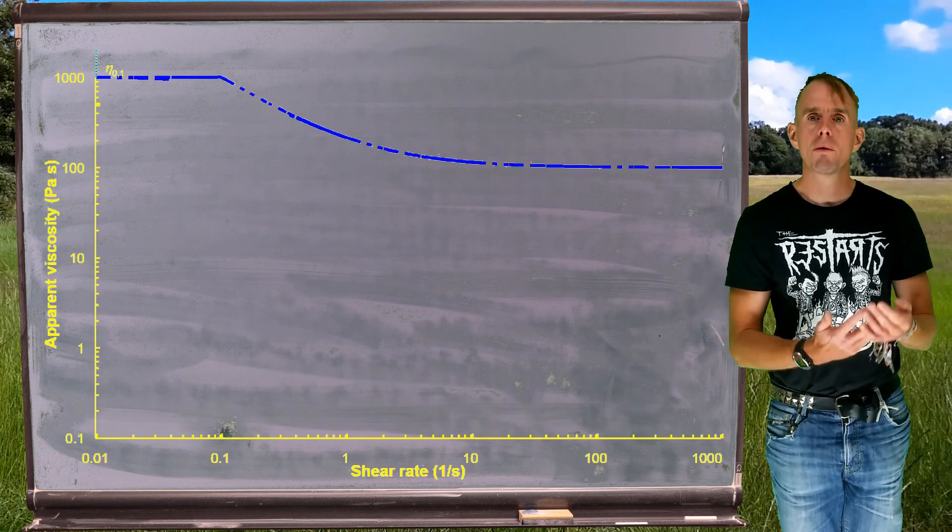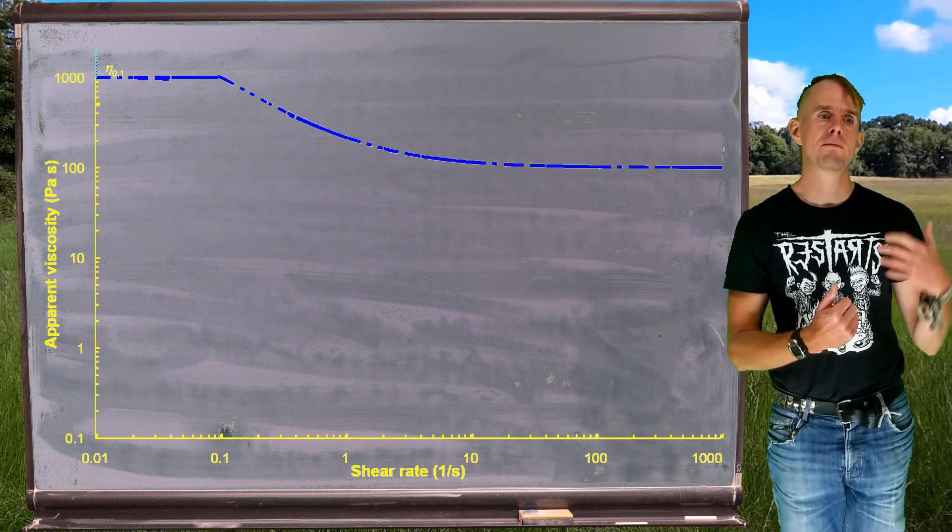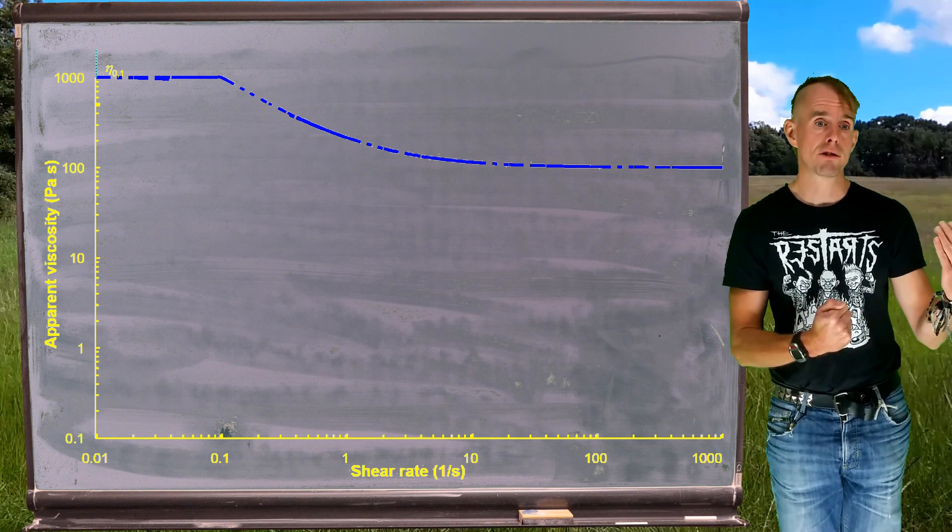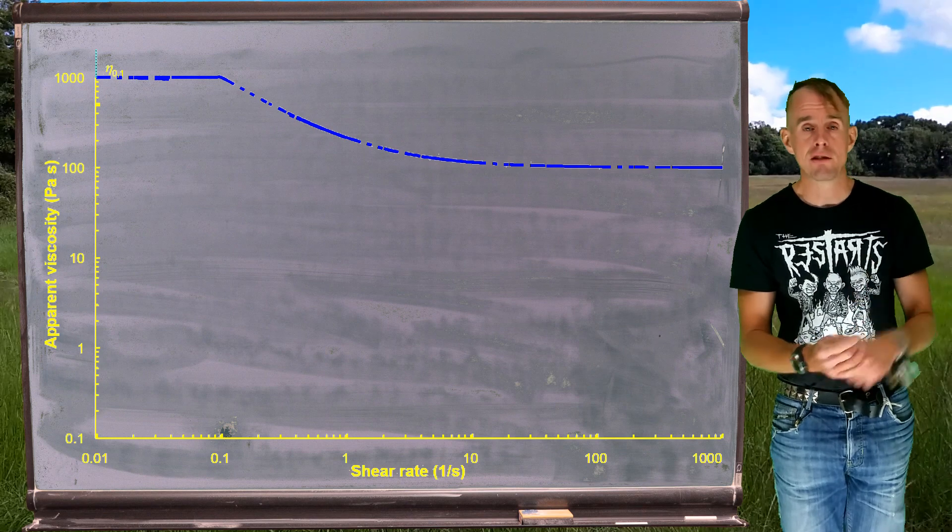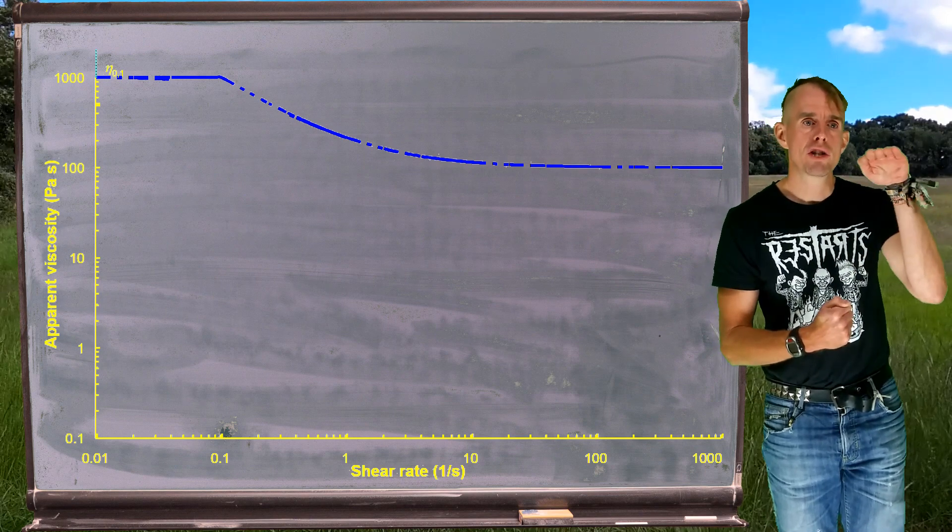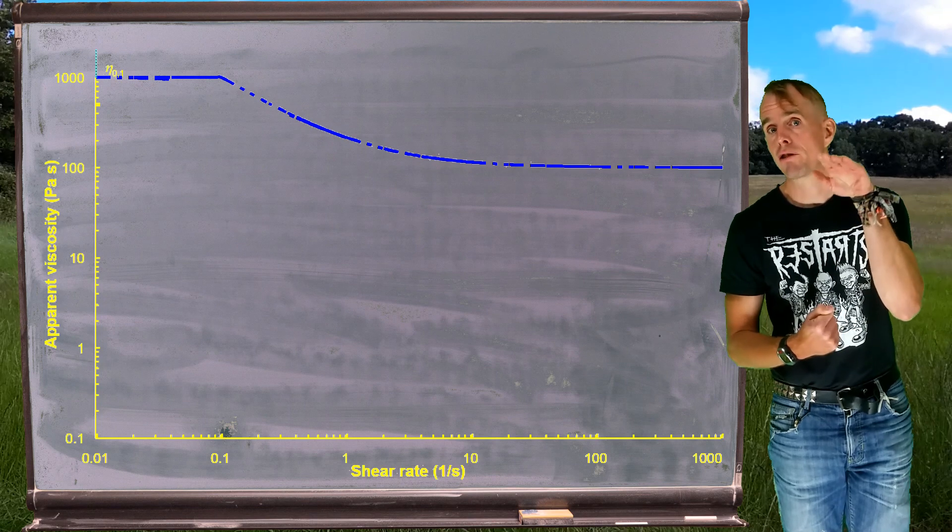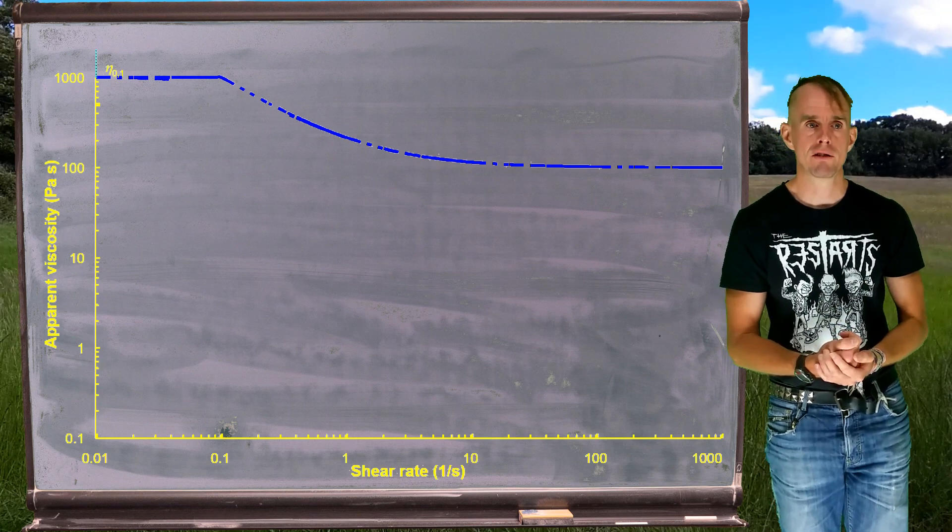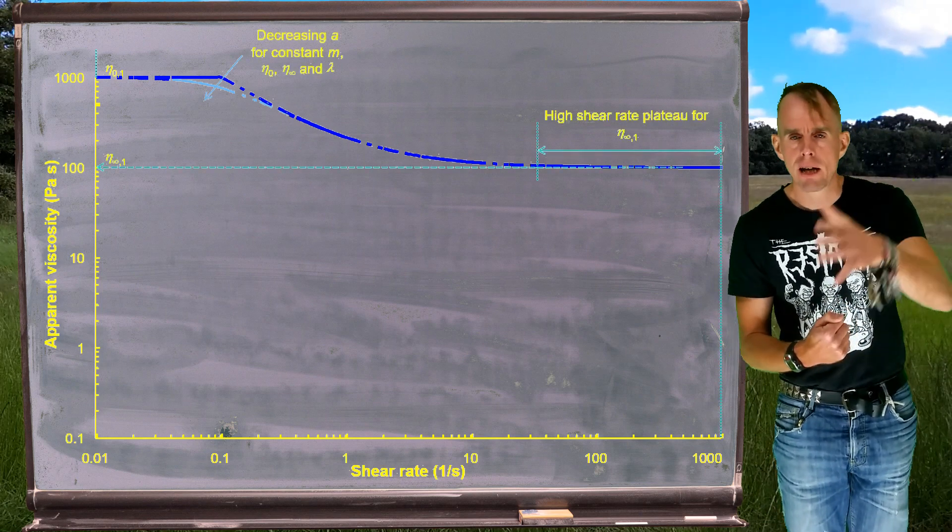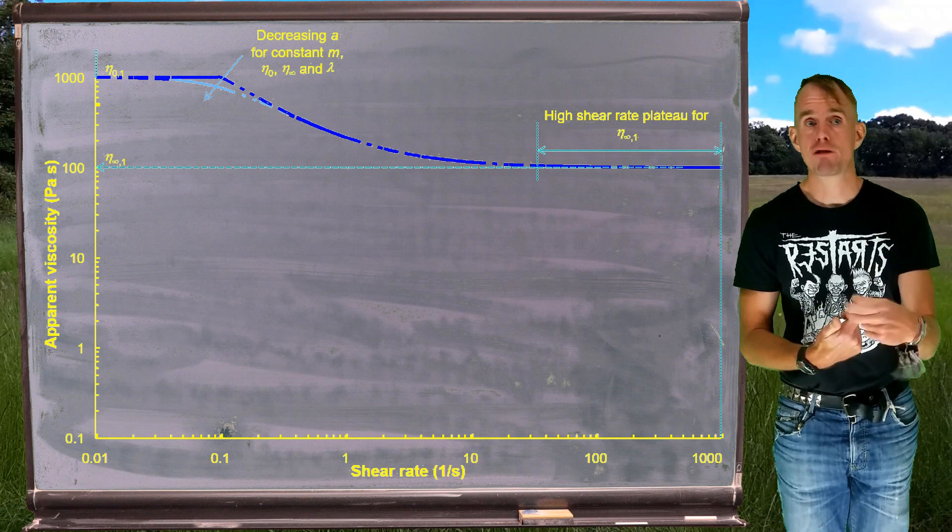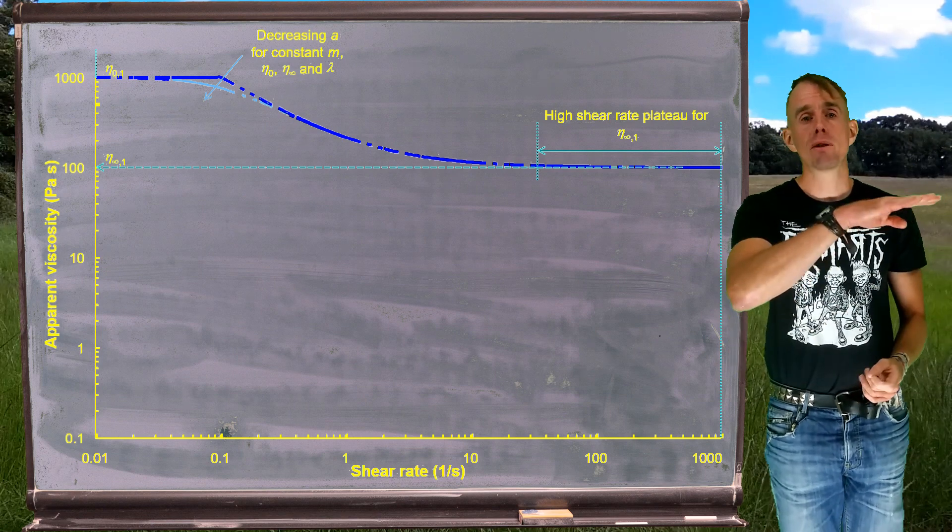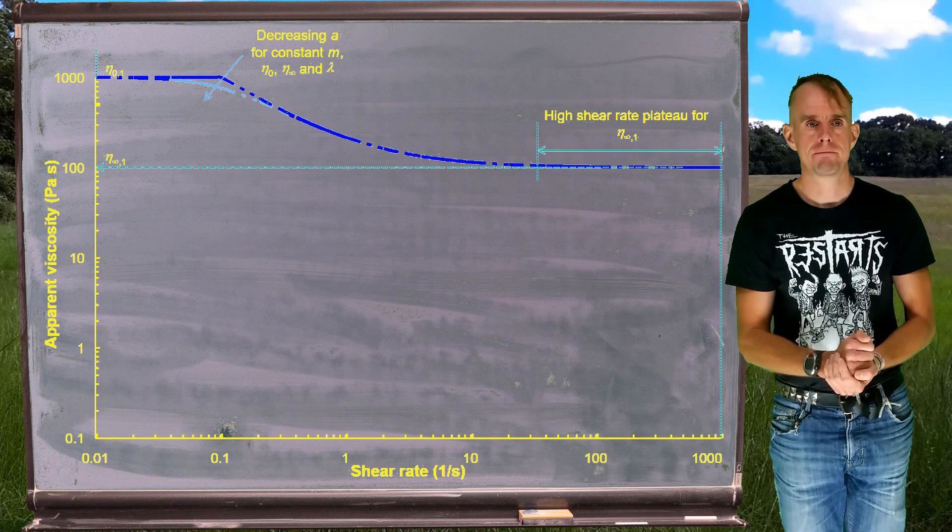As before, let's see what the Carreau-Yasuda equation now predicts, in terms of apparent viscosity as a function of shear rate. Again, on log-log axes on the blackboard, you've got apparent viscosity plotted out for given values of eta zero, eta infinity, and the remaining parameters. So we can see that the low shear rate plateau is set by eta zero, and we now have the presence of a high shear rate plateau, which is set by eta infinity. And the transition away from the low shear rate Newtonian plateau, how sharply you enter that shear thinning region, is governed by a, the transition parameter. And you can see now on the blackboard, I have decreased a, and the fluid transitions more gently into the shear thinning region.